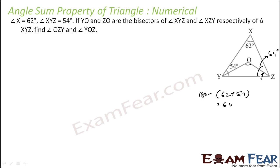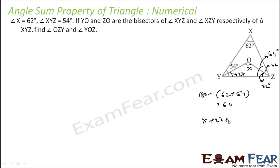Since the full angle is 64 degrees, the bisected small angle will be 32 degrees. Similarly, this angle is 54, so the bisected small angle is 27 degrees. Now to find angle YOZ, we have 32 degrees already. Let this be x, so x plus 27 plus 32 equals 180 degrees. Solving: x equals 121 degrees.